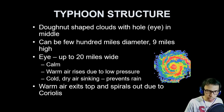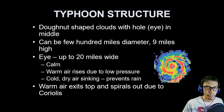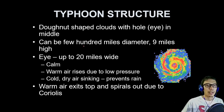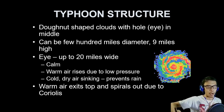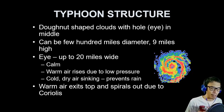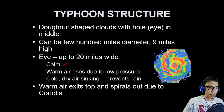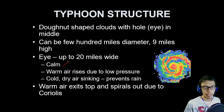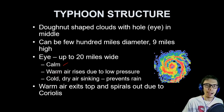A typhoon can be a hundred miles in diameter or nine miles high, and the eye itself can be 20 miles wide — it depends on the intensity of the typhoon. The eye is usually the calmest region of the typhoon: there is no rain, no wind, and sometimes you can even see sunlight at the middle.